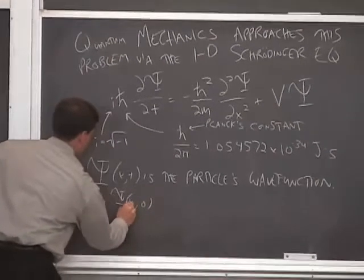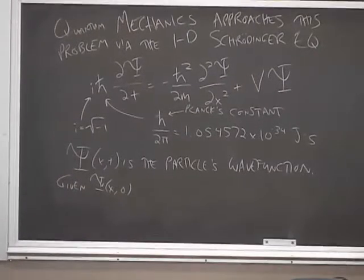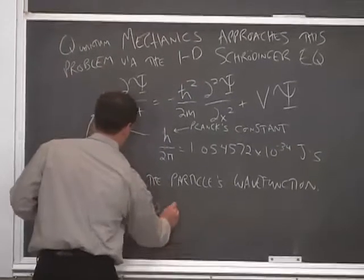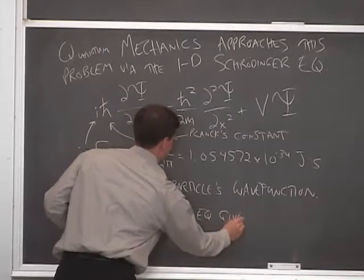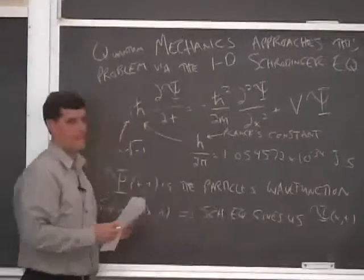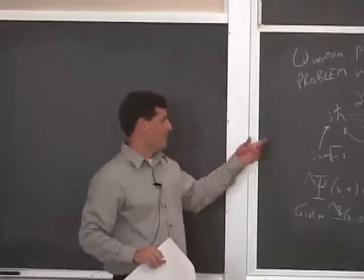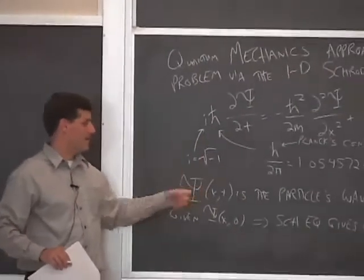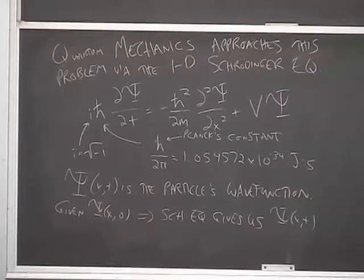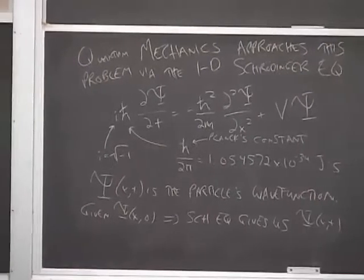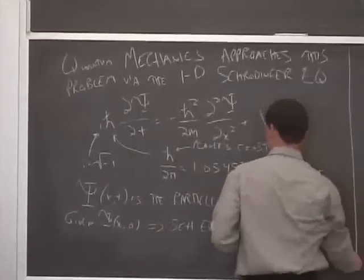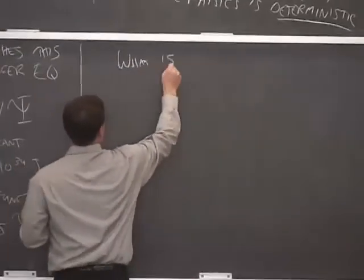So given some initial conditions, so if we prepared our experiment such that we knew where the particle was, or at least we knew what its wave function was at t equals 0, and we knew the potential, we could then solve this. And the Schrödinger equation will give us the wave function at all future values of time. So I think we can see that by inspection. If we accept this as an equation, if we have an initial condition, we could certainly solve it and find the wave function for all future values of time. That's, of course, what we're going to be doing for the next couple of weeks is solving this exactly for some very special potentials and then learning ways to solve it in general using some approximation techniques. But this is, of course, dodging the fundamental question of what is the wave function.